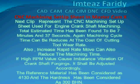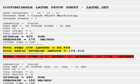The next clip represents the CNC machining setup sheet used for engine crankshaft machining. The total estimated time has been found to be 7 minutes and 37 seconds. Machining cycle time can be reduced at the cost of cutting tool wear rate, and increased rapid-rate moves can also reduce the machining time. If high RPM values cause imbalanced vibration of the crankshaft forging, it shall be adjusted accordingly. The reference material has been considered as 4130 steel and the hardness has been considered as 300 Brinell Hardness Number.